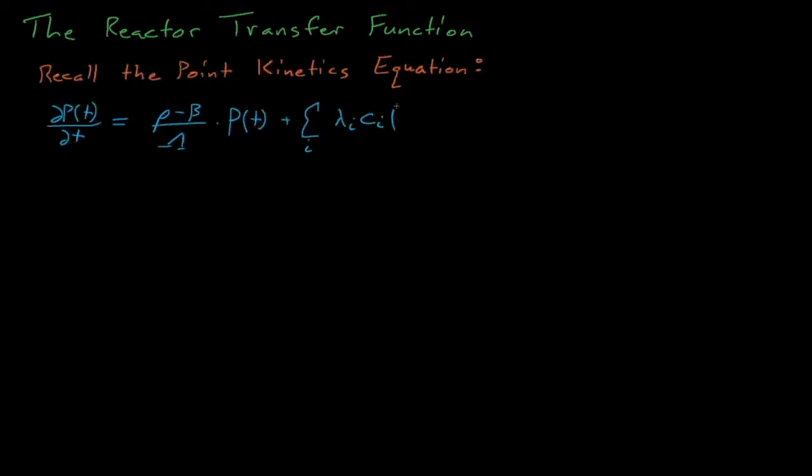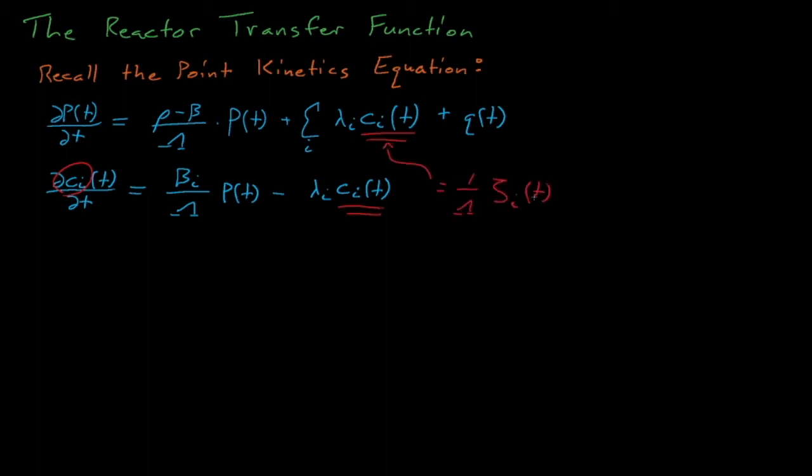You may notice that these equations are slightly different. By convention, they include C of I instead of squiggle of I for the delayed neutron precursor concentration, but C is just a version of squiggle that has been normalized slightly differently. Ultimately, this discrepancy of notation will not make much of a difference.